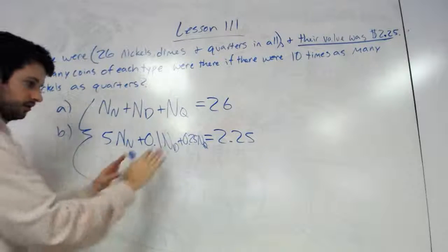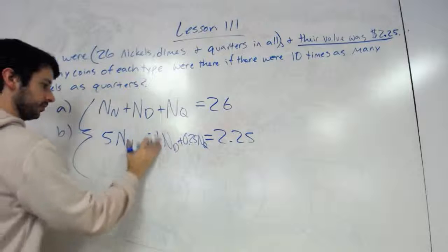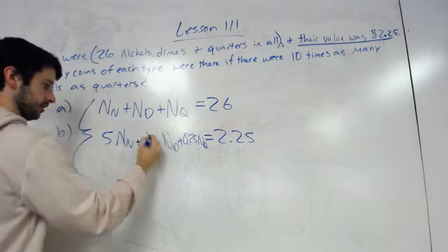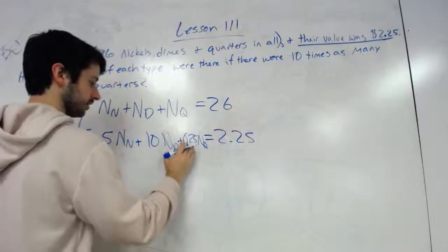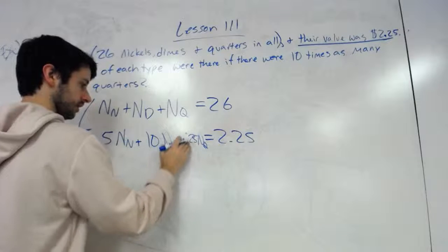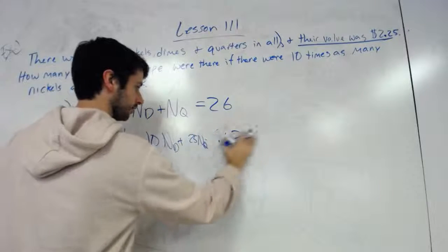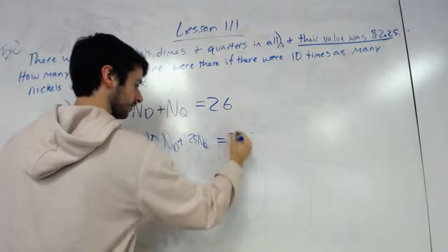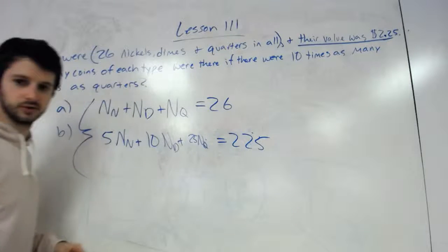So this would just be 5 times the number of nickels plus 10 for dimes and then 25 for quarters equals 225.